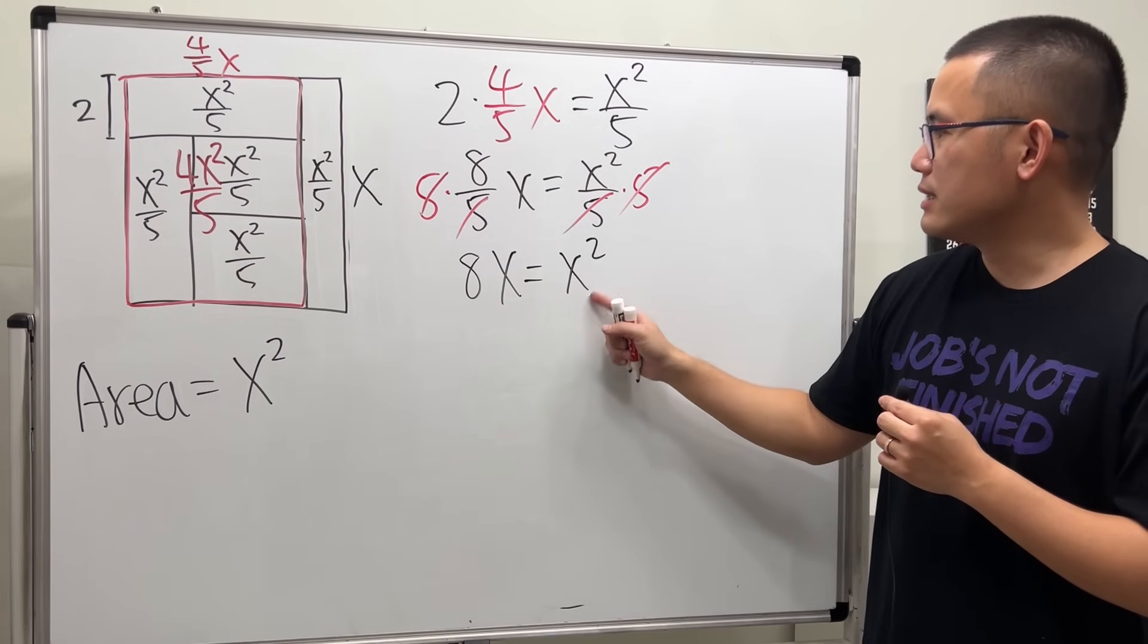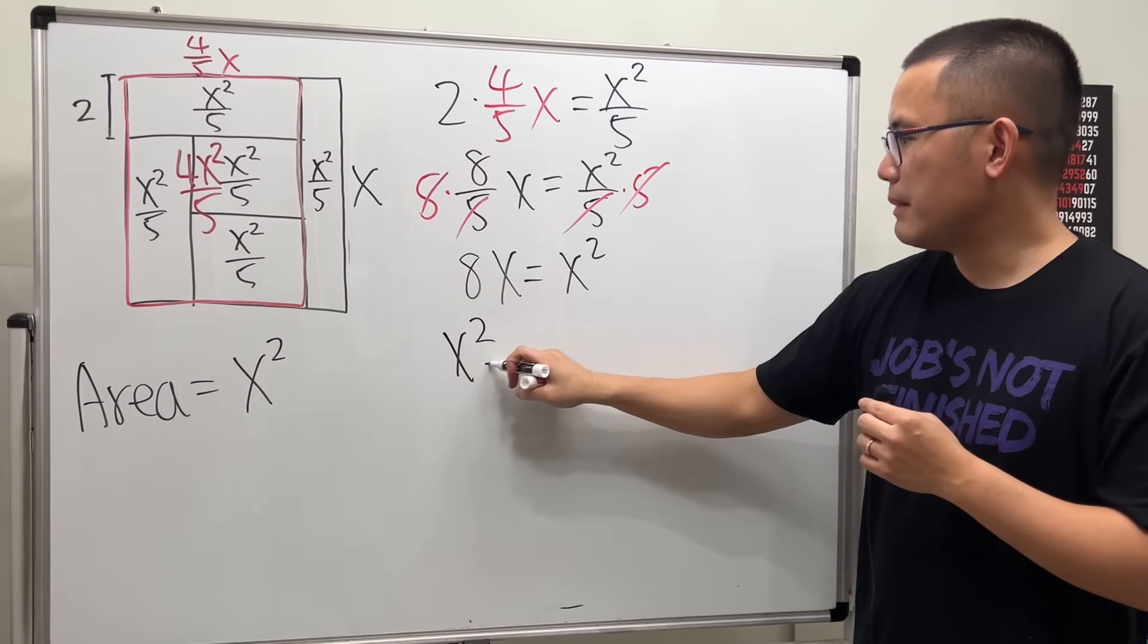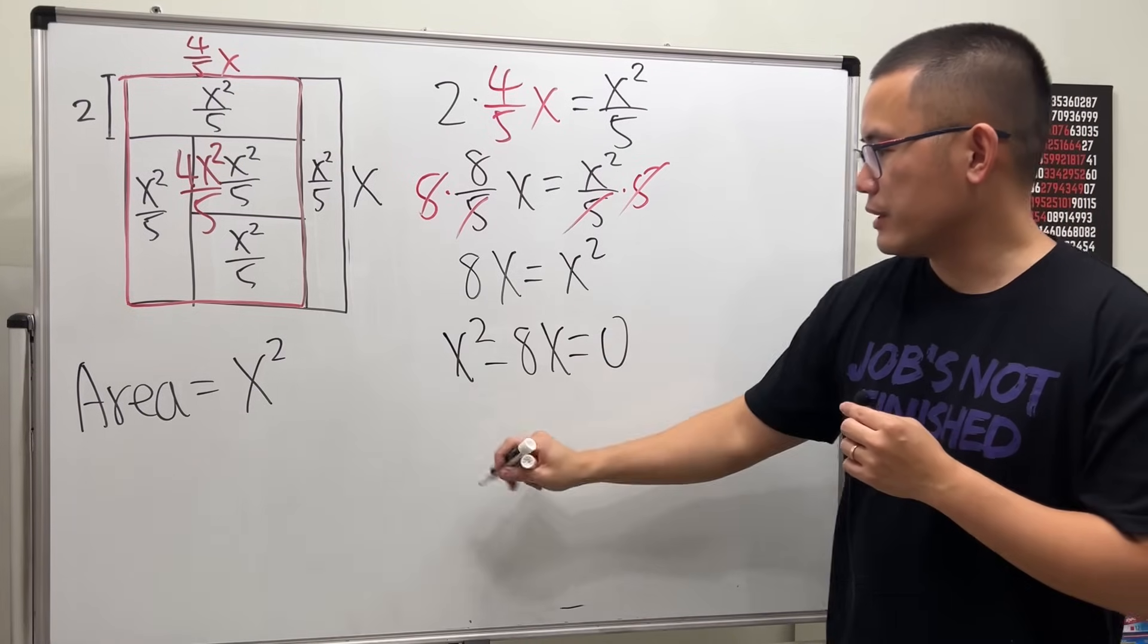And then we can put this to the other side, but let me write this down first. So x squared minus 8x equal to 0, and then factor out x.